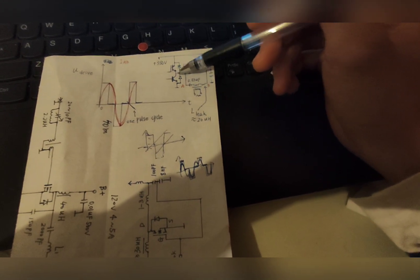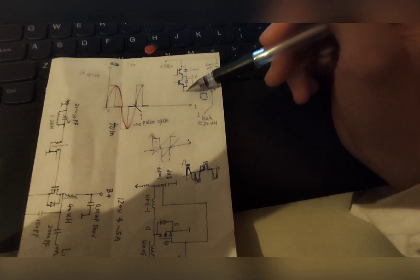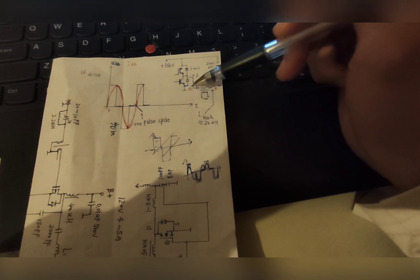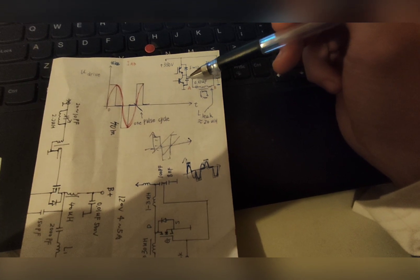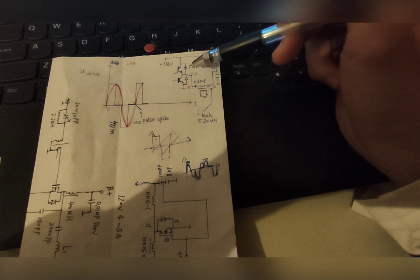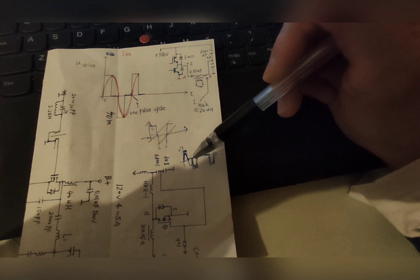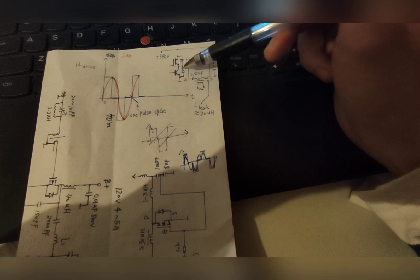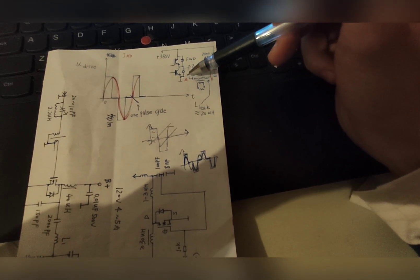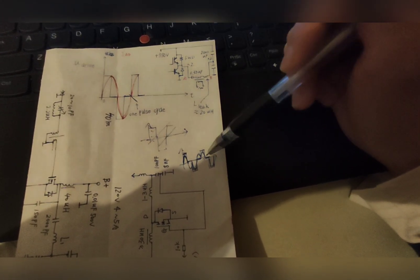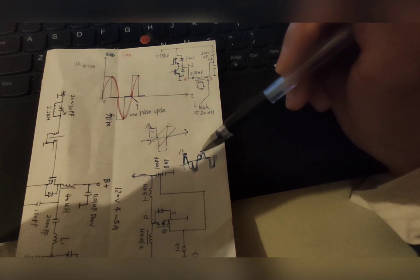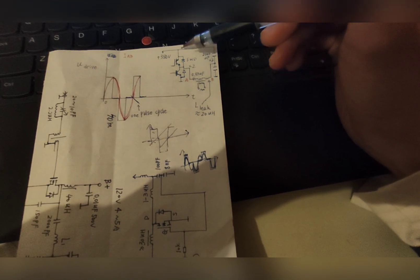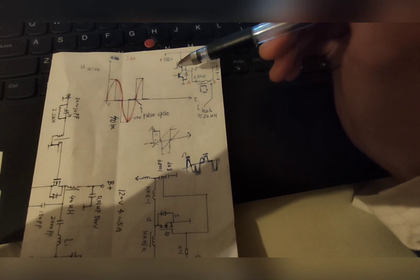But in my case, since I use some pretty old IGBT modules, the freewheeling diode can't recover that fast. If they don't recover very fast, you see, this diode is conducting. And the next pulse here, this IGBT will conduct. If this diode is not recovered, then you will have a shoot through.